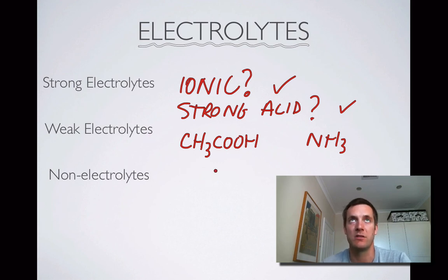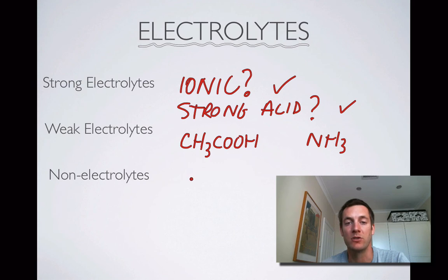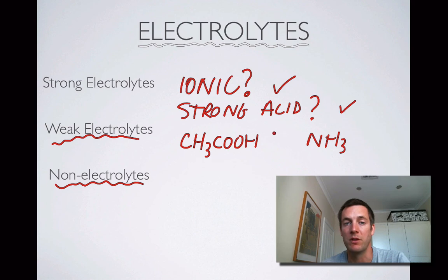If your substance — let's say sugar, for example — isn't ionic, isn't a strong acid, and isn't a weak acid or a weak base, then it's termed a non-electrolyte, meaning it will release no ions in solution. Weak electrolytes will have some of their molecules split up into ions, but not very many, whereas strong electrolytes will split up entirely into ions.